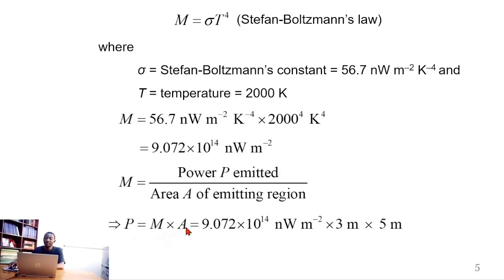That gives P equal to M times A and we substitute the value of M and then the value of the area. So this is M, which we've obtained from this. And this is the area, product of 3 meter times 5 meter, which gives the area. 3 by 5 is the dimension of the blackbody.